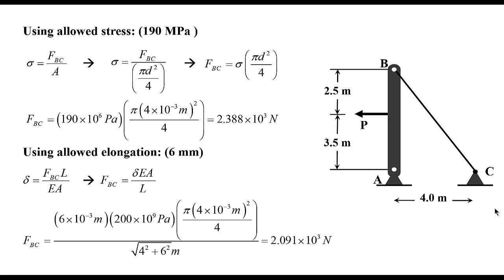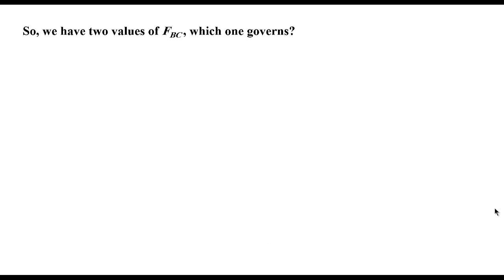Which one should I consider? Which one should be the one I'm looking for? So we have two values for FBC, which one governs? Here's the thing, as we apply the load to the cable, we start from 0. With no load, and the cable has no elongation, no stress, and gradually we apply the load.